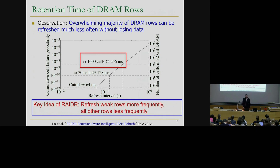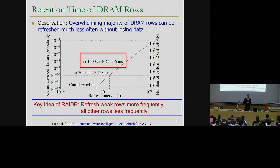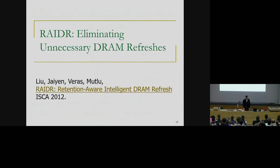One idea to exploit this - perhaps the simplest - is to refresh weak rows more frequently. Here we define a weak row as a row that contains a cell that will fail after 64 milliseconds, while strong rows can retain data for much longer. The simple mechanism of this paper published in 2012, called RADAR, is that we refresh weak rows more frequently and all other rows less frequently. This mechanism proposes a technique that can be implemented at very low cost. If you want to read it, you can get more details from the paper.